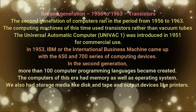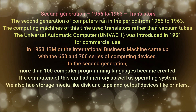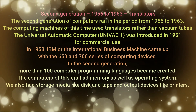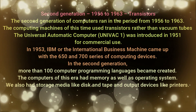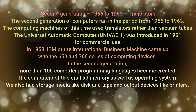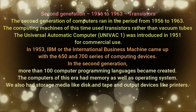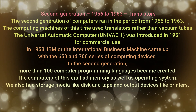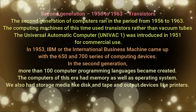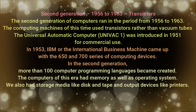In the second generation, more than 100 computer programming languages were created. The computers of this era had memory as well as an operating system. We also had storage media like disks and tape, and output devices like printers.